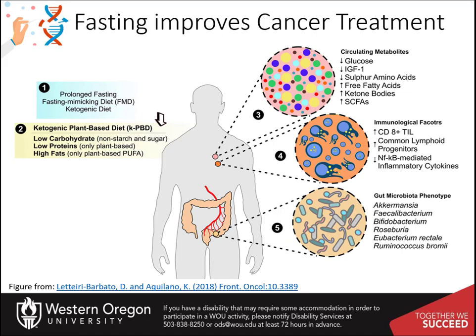A number of studies have now shown that fasting and other diets that promote ketogenesis are effective adjuvants during cancer therapy. Adjuvants are modalities that improve the effectiveness of a treatment, but do not display the desired effect on their own. Multiple effects of fasting include reduced circulating glucose levels, reduced sulfur-containing amino acids, and increased free fatty acids, ketone bodies, and short-chain fatty acids. This alters the gut microbiota and many systems within the body, such as inflammatory response, and is thought to create a hostile environment for cancer cells, causing an increase in cell death when treated with chemotherapeutic agents.